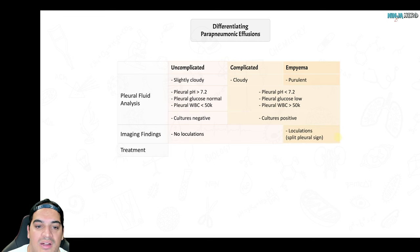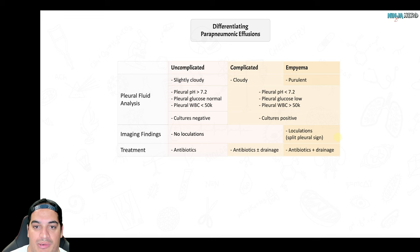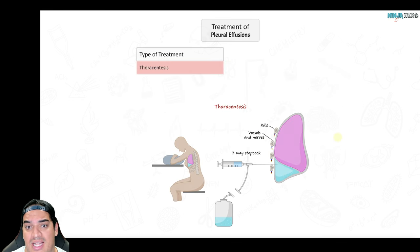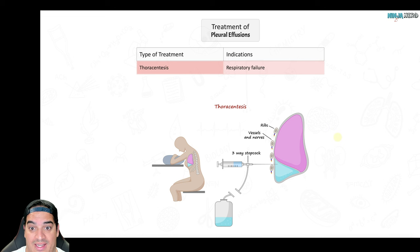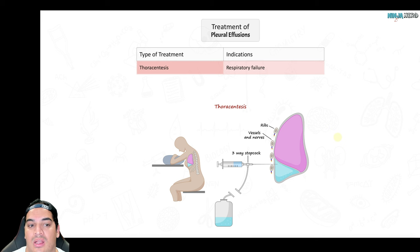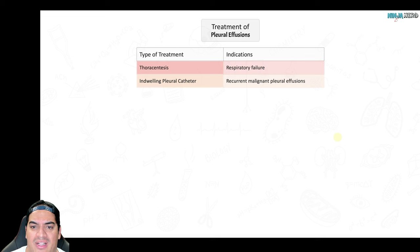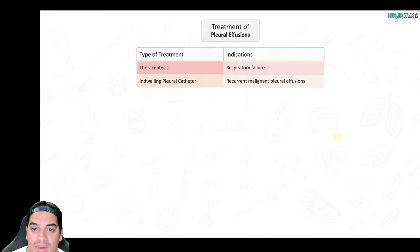Treatment: uncomplicated parapneumonic effusions need only antibiotics. Complicated effusions or empyemas require antibiotics plus a chest tube. The key principle for all effusions is treating the underlying cause. For respiratory distress, perform thoracentesis to remove the fluid. If multiple thoracenteses are needed — especially for malignant effusions — consider placing an indwelling pleural catheter.